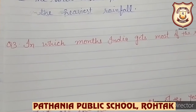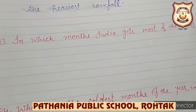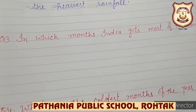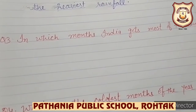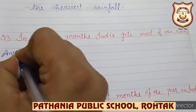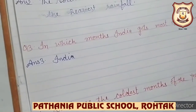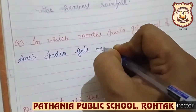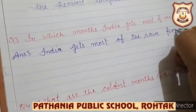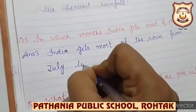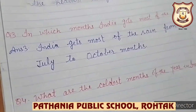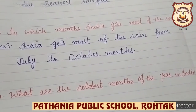Question number 3: In which months does India get most of the rain? You have to write the months. The monsoon season starts in June, and in some parts it begins in July also. The season continues till the end of October. So the answer is: India gets most of the rain from July to October months.